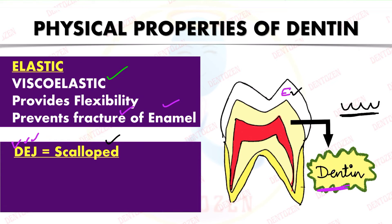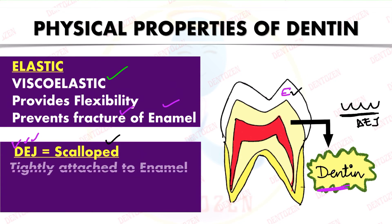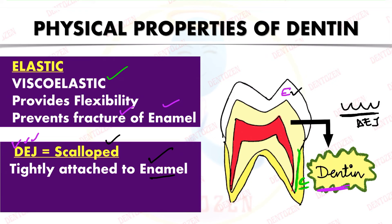At the dentino-enamel junction, dentine is tightly attached to enamel. On the root portion, the outer surface of dentine interfaces with cementum. The dentino-cemental junction (or cemento-dentinal junction) is relatively flat, and at this junction, collagen fibers from both dentine and cementum intermix.